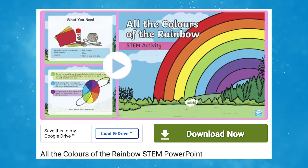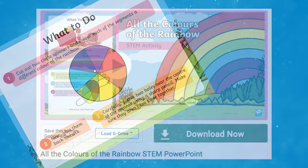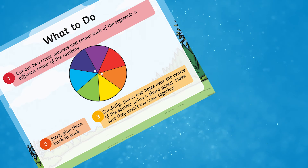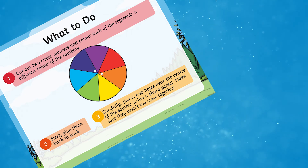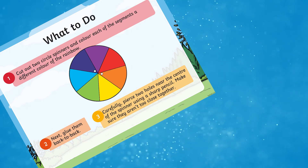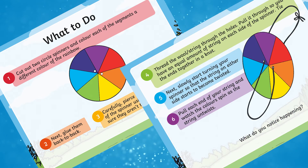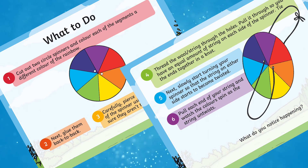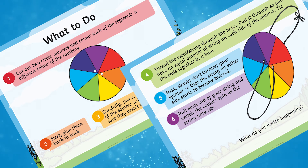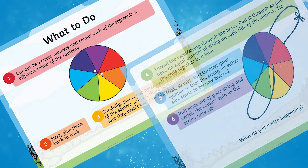Our all of the colours rainbow STEM PowerPoint is a great activity for your children to complete. This STEM activity creates a colour spinner using the colours of the rainbow. When the children spin their colour spinner they will notice an unusual result.